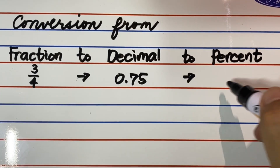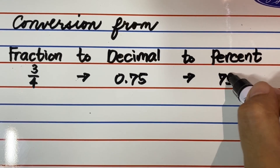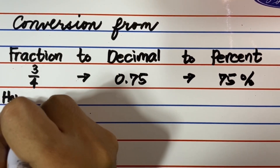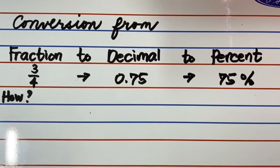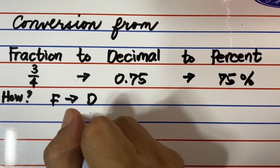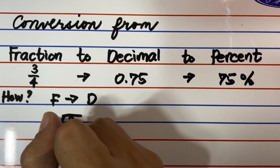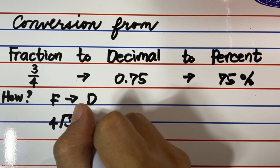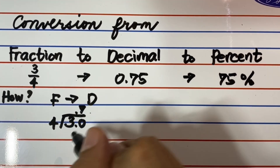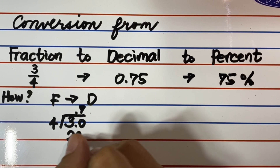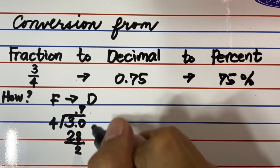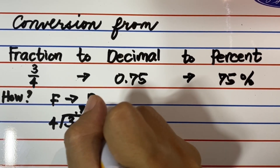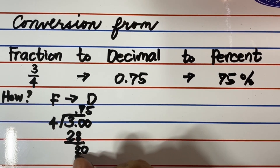3 over 4 is read in fraction as three-fourths. 0.75 is read in decimal as 75-hundredths. 75%. How do we convert 3 over 4 or three-fourths to decimal? We simply divide the numerator, which is three, by the denominator, which is four. Watch and learn. 3 over 4 or three-fourths becomes 0.75 or 75-hundredths.